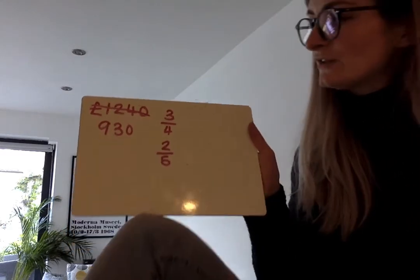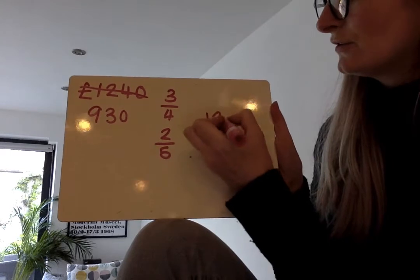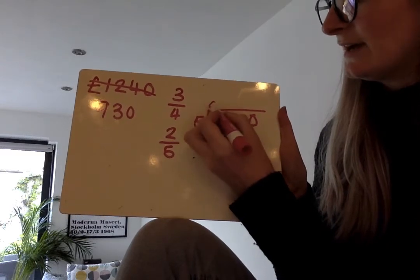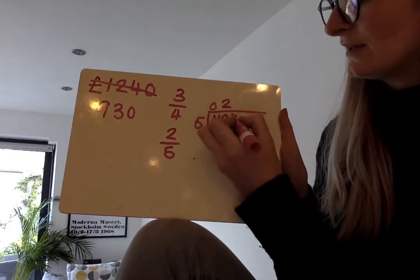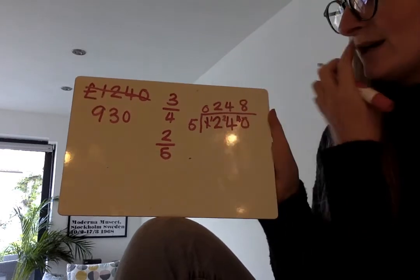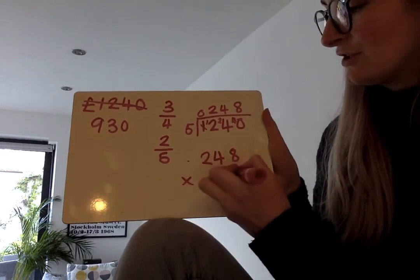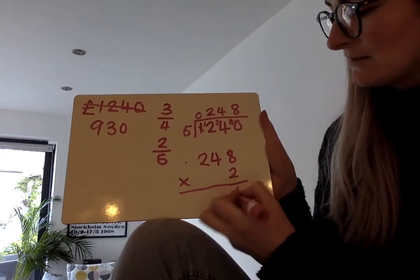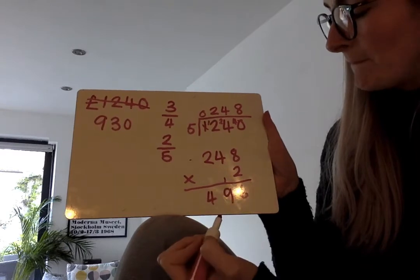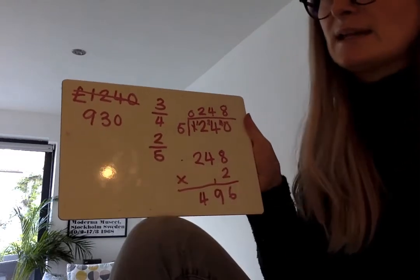And then I need to do the same for two-fifths. If you look at what two-fifths of a number is I need to divide by the denominator and times by the numerator. So divided by 5, which gives 248 times 2, which equals 496. So that's how much they think they will make in the second year.